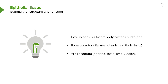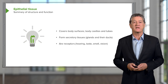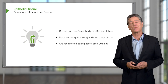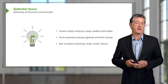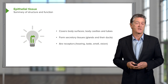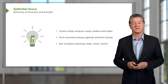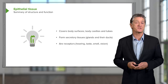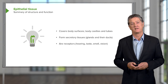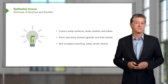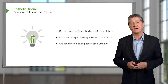Epithelia cover body surfaces — skin is an example. Skin is the external covering of the body; it's a very specialised epithelium and I'll talk about skin specially in another lecture. Epithelia also line the body cavities such as the thoracic cavity, the pleural cavity, and the abdominal cavities. It also lines tubes — some of those tubes are external to the body such as the respiratory passages and the gastrointestinal tract, and some tubes are internal such as blood vessels.